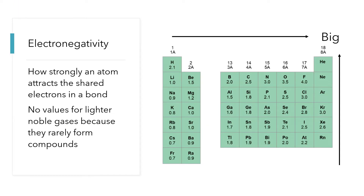Electronegativity is a property that an atom exhibits when it is in a bond with another atom, and it's a measurement of how strongly that atom pulls the shared electrons toward itself. You'll notice on this table that there's an overall trend — as you move towards the upper right corner of the table, the values get bigger. The biggest value of electronegativity is for fluorine and it's 4.0, that's the top of the electronegativity scale. The lighter noble gases don't have electronegativities because they don't really form compounds, though krypton and xenon are known to form a few, so there have been some measurements and estimates made of their electronegativities.